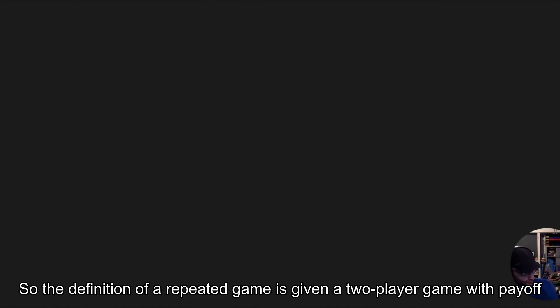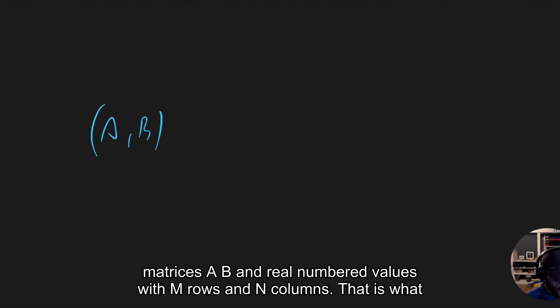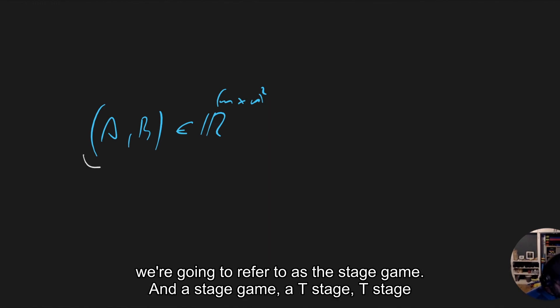The definition of a repeated game is given a two-player game with payoff matrix A, B and real numbered values, where there are m rows and n columns. That is what we're going to refer to as the stage game.